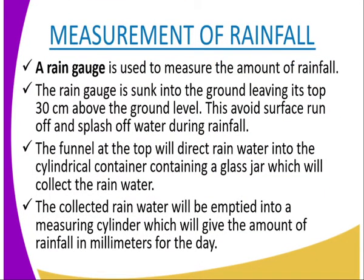Next we go to the measurement of rainfall. Rainfall is measured by the rain gauge. The rain gauge is sunk into the ground, leaving the top 30 centimeters above the ground — this is to avoid surface runoff and splash of water during rainfall. The funnel at the top will direct rainwater into the cylindrical container with a glass jar which collects the rainwater.